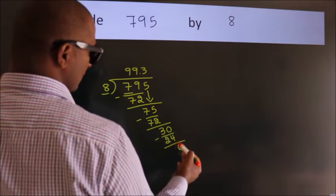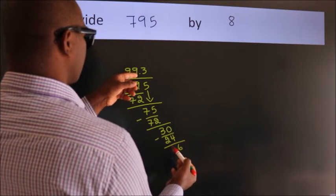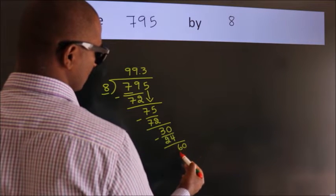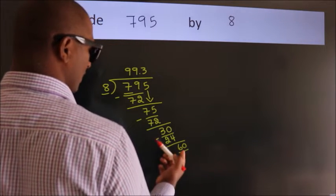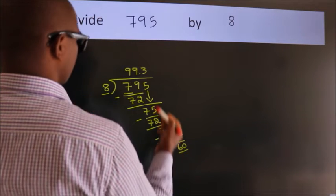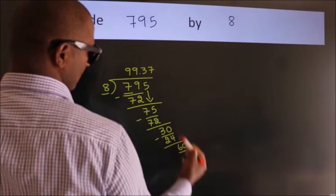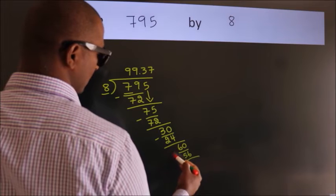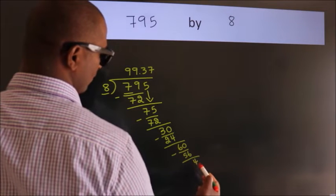After this, we already have the decimal. So directly take 0. So 60. A number close to 60 in 8 table is 8 sevens, 56. Now we subtract. We get 4.